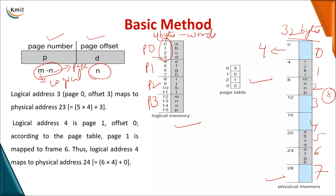For logical address 3: it belongs to page 0, and the displacement within the page is 3 (counting from 0, you reach the 3rd byte). Looking up the page table, page 0 is stored in frame 5. The physical address = frame 5 × 4 bytes + offset 3 = 20 + 3 = 23. So the value D is stored at physical address 23.